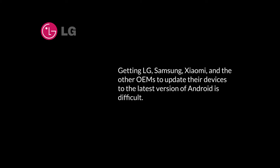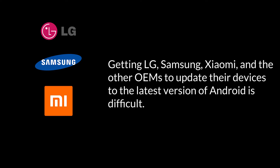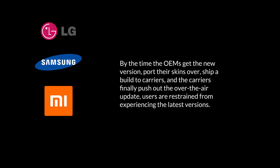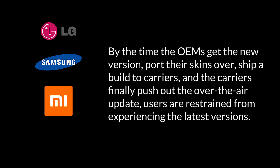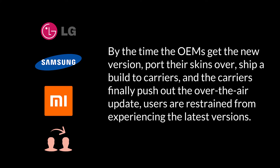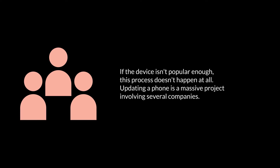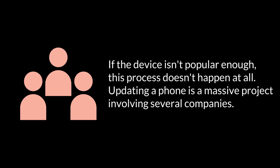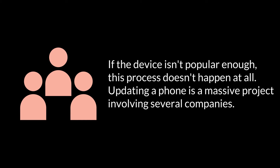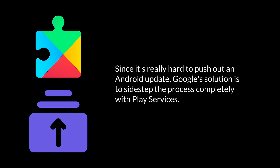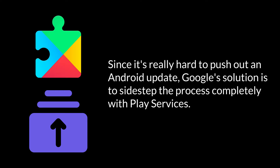Getting LG, Samsung, Xiaomi, and other OEMs to update their devices to the latest version of Android is difficult. By the time the OEMs get the new version, add their skins, ship a build to carriers, and the carriers finally push out the over-the-air update, users are restrained from experiencing the latest versions. If the device isn't popular enough, this process doesn't happen at all — updating a phone is a massive project involving several companies. Since it's really hard to push out an Android update, Google's solution is to sidestep the process completely with Play Services.